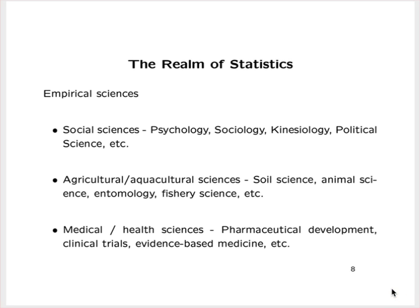The empirical sciences are another area of application. The social sciences — such as psychology, sociology, kinesiology, and political science — all utilize statistics quite a lot, and some of the most interesting examples come from these areas. The agricultural and aquacultural sciences are a very big area, not only as a consumer of statistical procedures, but as a producer of that kind of methodology as well.